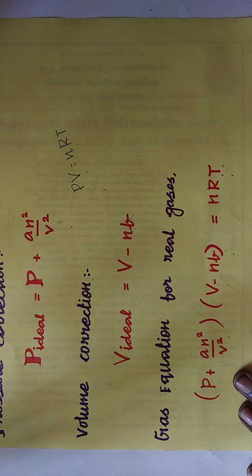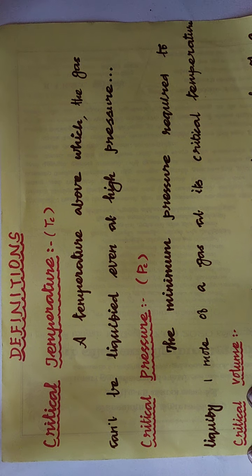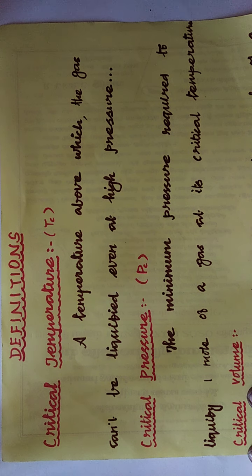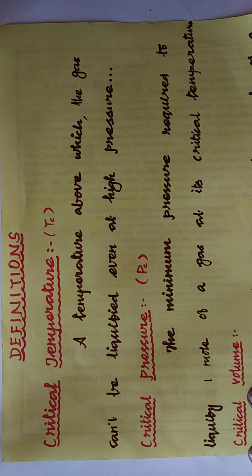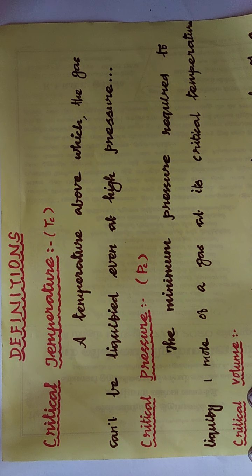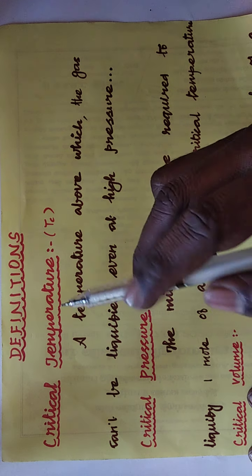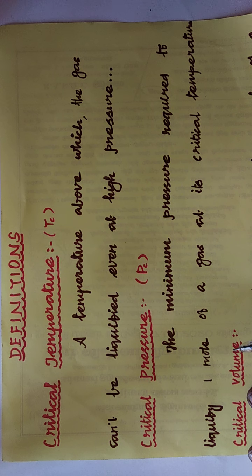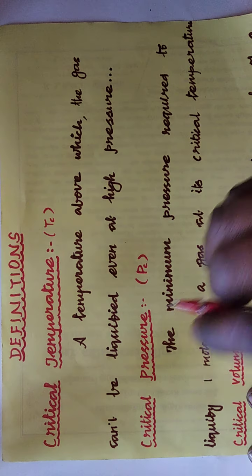In your textbook, next to the Van der Waals equation, there is a concept called Andrew's isotherm, but I didn't teach that — I will teach it when school reopens. From Andrew's isotherms, only the important definitions I have taken. All these definitions are related to the conversion of a gas into liquid. We are going to see three definitions: critical temperature Tc, critical pressure Pc, and critical volume Vc.